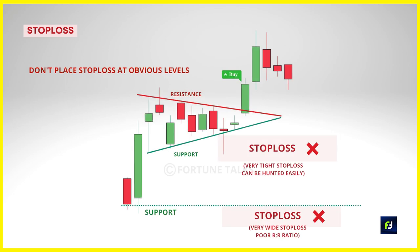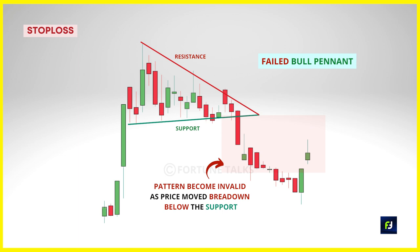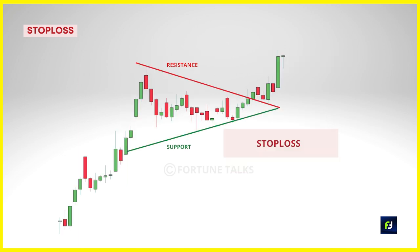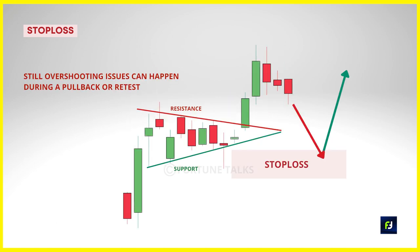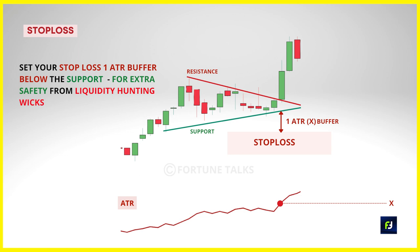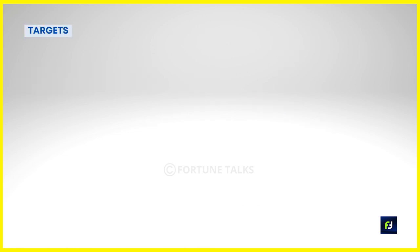For stop losses on the bull pennant, avoid obvious levels like support/resistance and swing highs/lows. Your stop loss should be at a level that, if crossed, invalidates your setup. The bull pennant is deemed invalid when price breaks and closes below the bottom trendline support. Keep the stop loss below this trendline support or below the swing low level. Due to overshooting issues causing long wicks, give trades more breathing space by setting the stop loss 1 ATR below the swing low level.